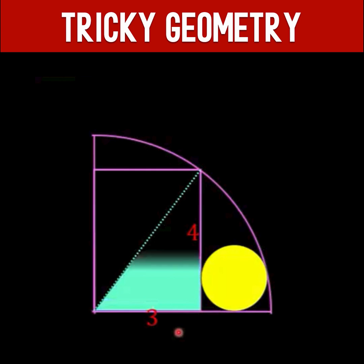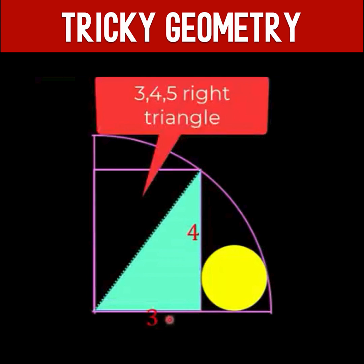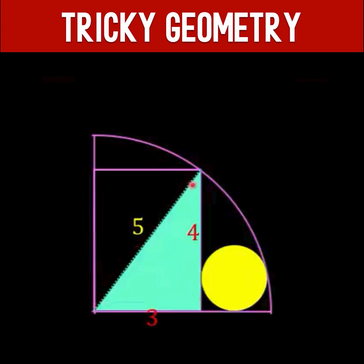Then let's consider this triangle. What we have here is a three by four right triangle and so we now know that the radius of the quarter circle is five units.